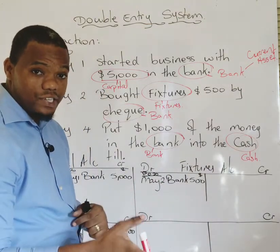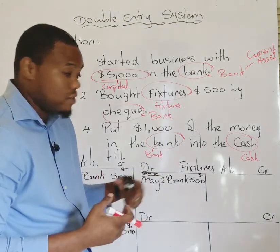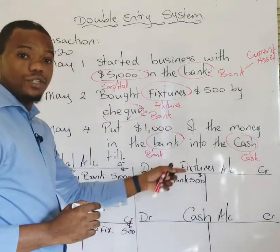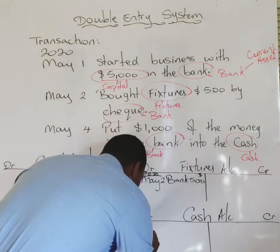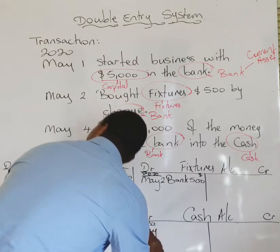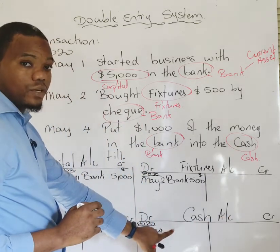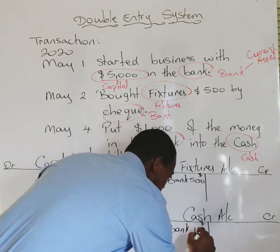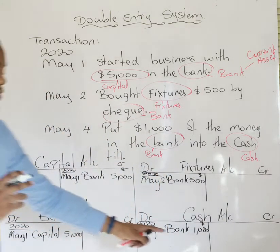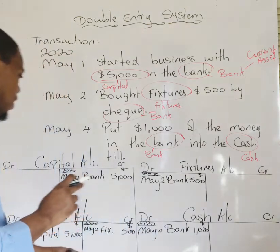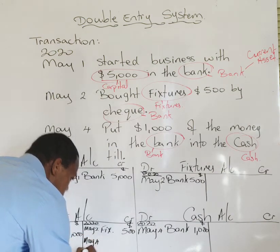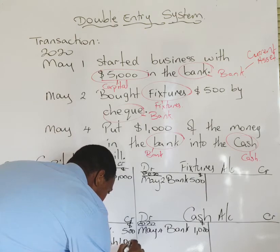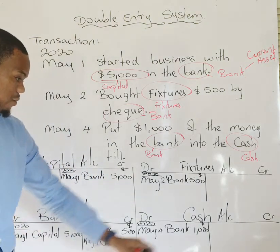We draw up our cash account. Since the cash account is receiving, information goes on the debit side: 2020, May 4, then the name of the other account — bank — and the amount: one thousand dollars. For every debit entry there must be an equally corresponding credit entry, so in the bank account: May 4, then the name of the other account — cash — and the amount: one thousand dollars on the credit side. We've made a debit entry and a credit entry. Transaction three is recorded.